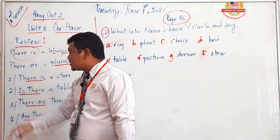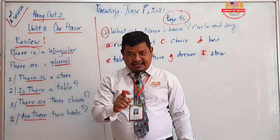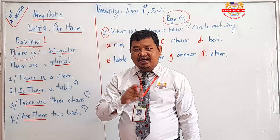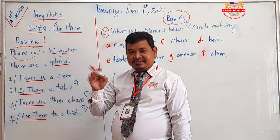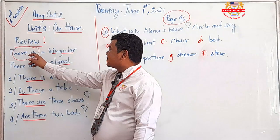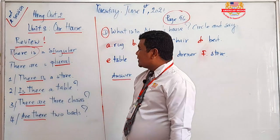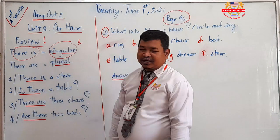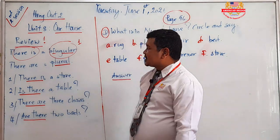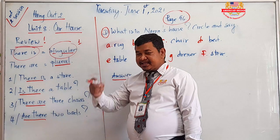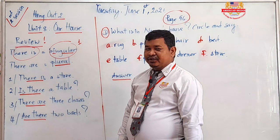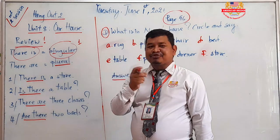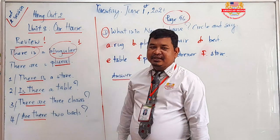'There is' is used when you have only one thing — singular. For example, 'I have a chair in my house' means 'There is a chair in my house.' Singular means one thing — one animal, one person. So we say: 'There is a man in my classroom' or 'There is a table in my classroom.'